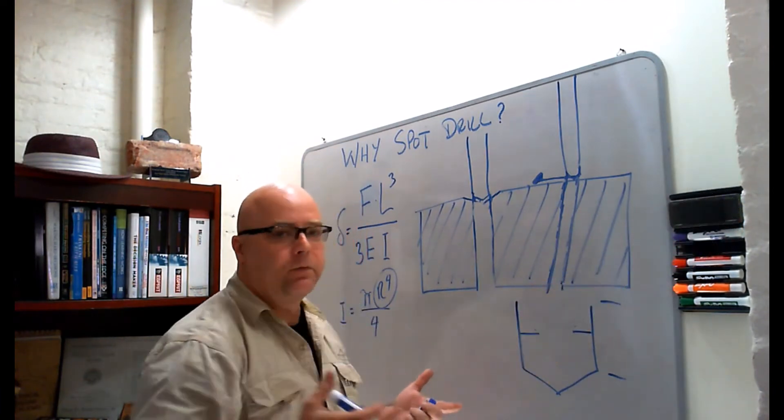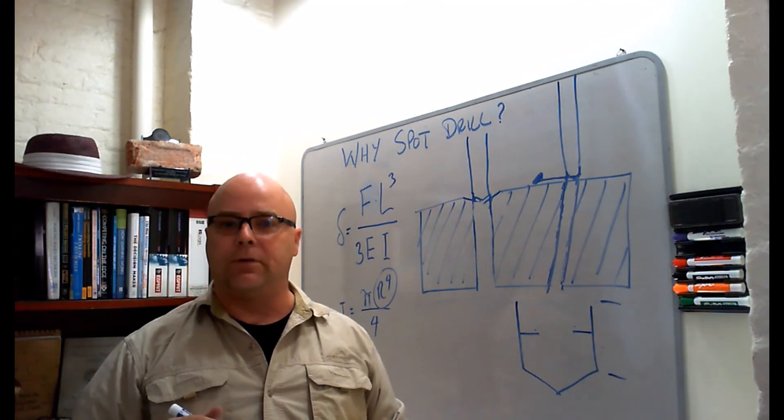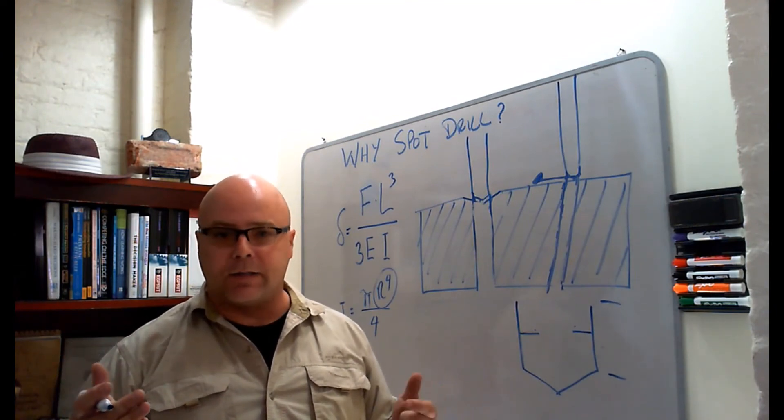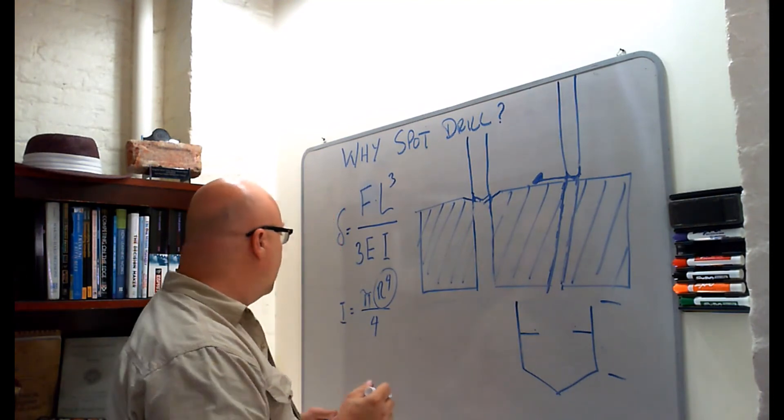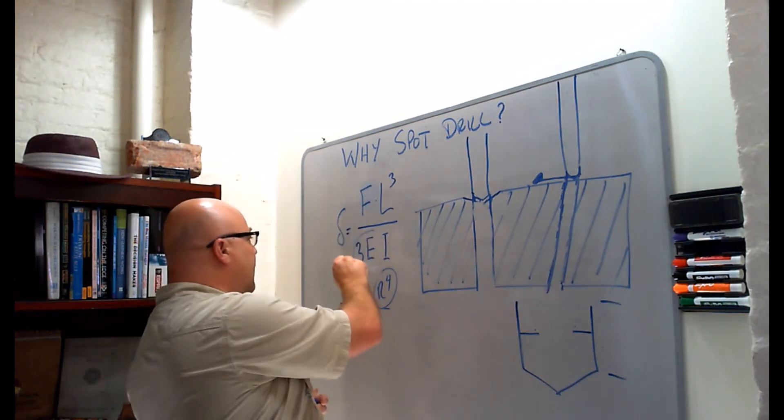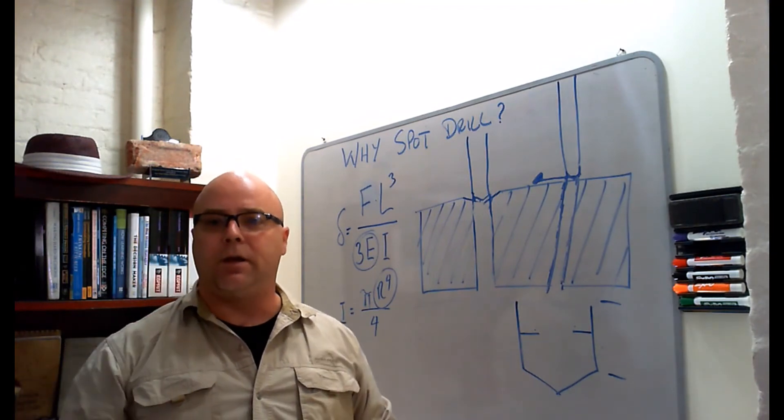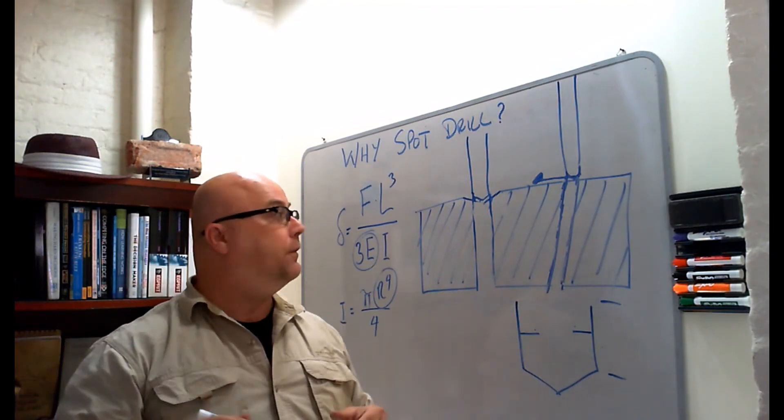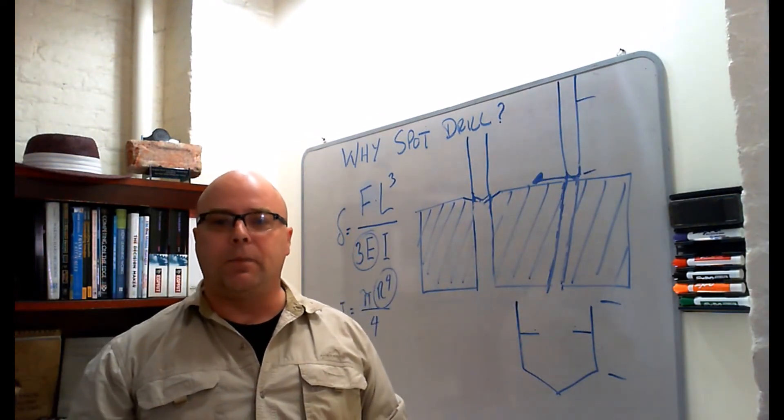Now do you always have to spot drill? Of course not. If you're already making a hole with a short stubby drill, the spot drilling is probably unnecessary. If you're using a carbide drill, where you have a very high elastic modulus, the deflection is going to be very small because of the elastic modulus of the carbide. If you've got a very short length, you probably don't need to do the spot drilling operation.